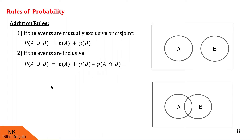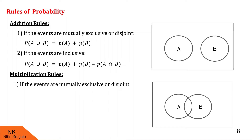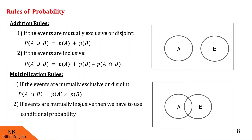Now let us look at the multiplication rule. For mutually exclusive or independent events, probability of A intersection B equals probability of A multiplied by probability of B. In the case of mutually inclusive events, we need to use conditional probability, which we will cover in the next lecture.